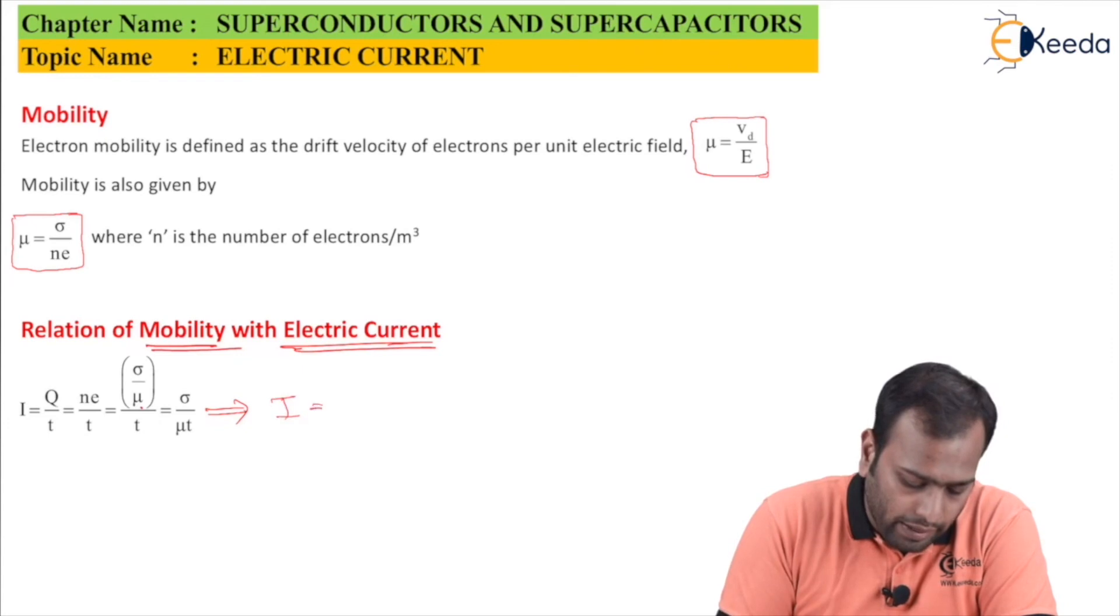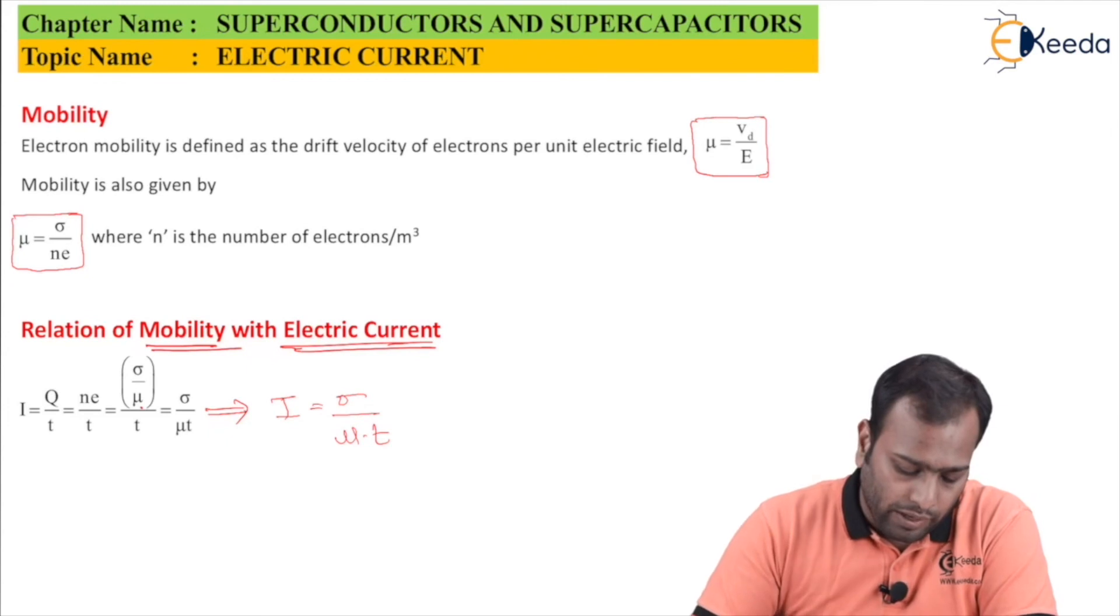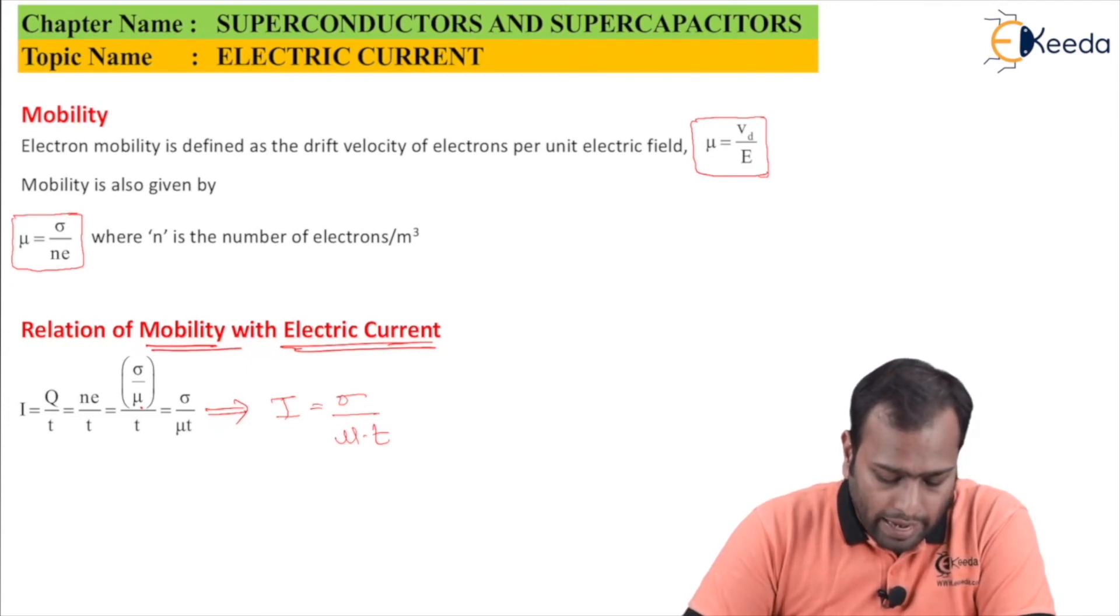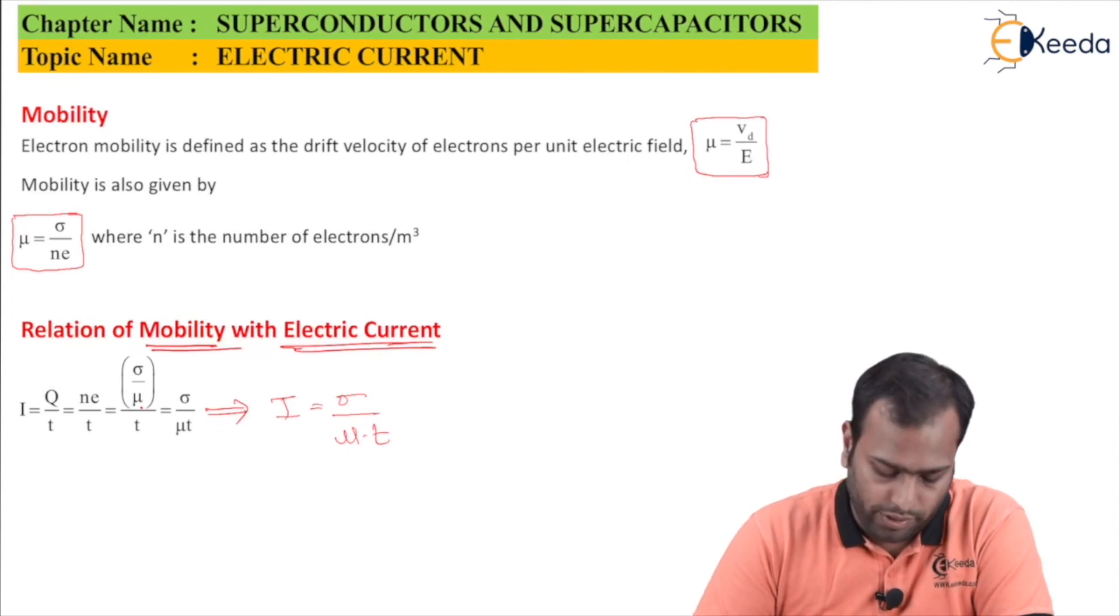This is the relation between the mobility and the electric current: I equals sigma upon mu into T. You can make a note that I and mu are inversely proportional, assuming sigma and T remain constant.